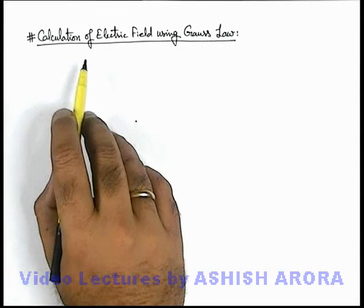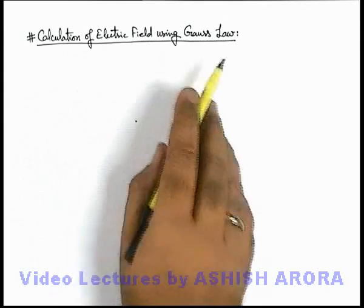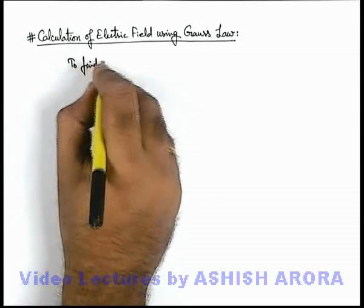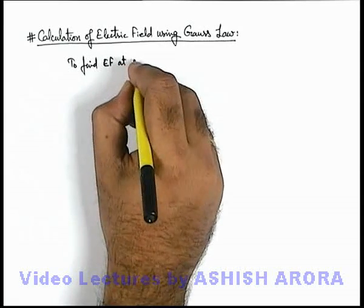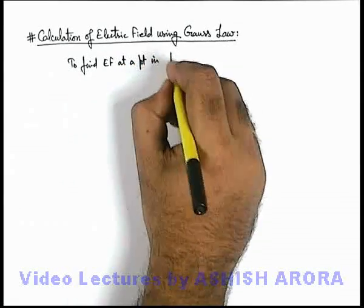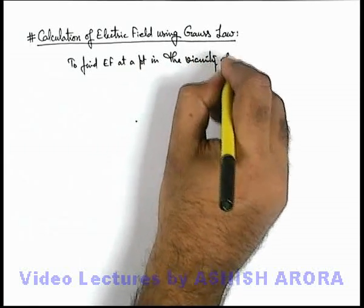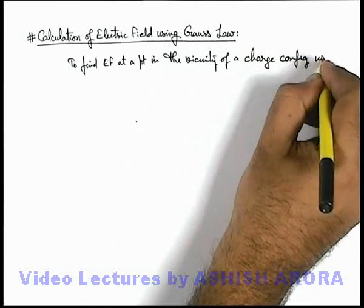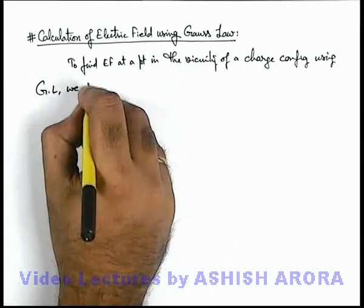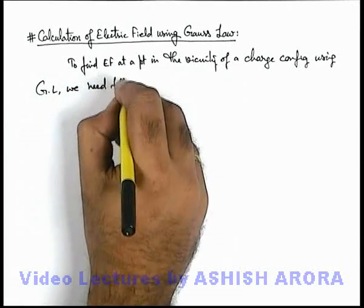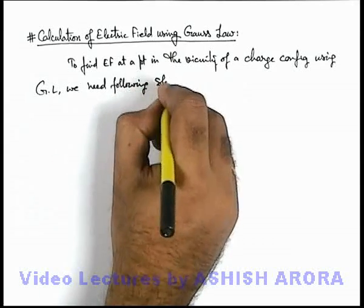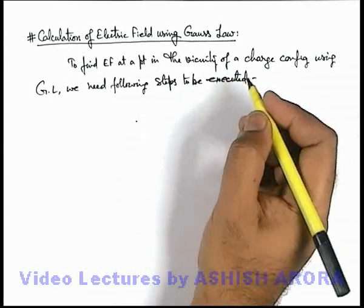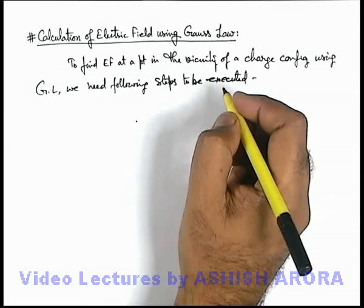Let's now discuss the calculation of electric field using Gauss's Law. For this electric field calculation, we can write down a few points. The very first is: to find the electric field strength at a point in the vicinity of a charge configuration using Gauss's Law, we need the following steps to be executed. These steps I would like all students to note down or very carefully keep in mind.